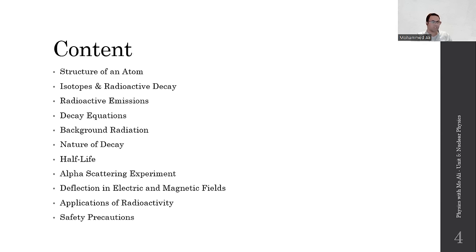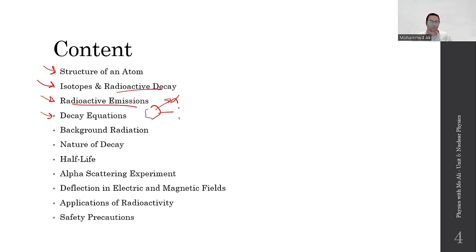Today we're going to talk about what an atom is, what isotopes are, and what radioactive decay is. There are different types of radioactive emissions — alpha, beta, and gamma — and we'll talk about decay equations: when a radioactive isotope emits an alpha particle, a beta particle, or a gamma ray, what happens to the remainder of the decaying substance. We'll also discuss how to measure background radiation and how radioactivity decreases over time.